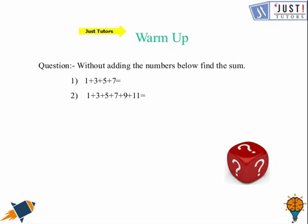Assuming that you have done them now we can discuss the answer. So here without adding the numbers below we need to find the sum. So what we can do here let's see how many digits: 1, 2, 3, 4. So there are 4 so we will do 4 square which is 16. And here in this one let's see how many digits are there: 1, 2, 3, 4, 5, and 6. So what is the square of 6? That's 36 and that's the answer.